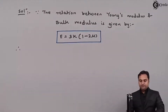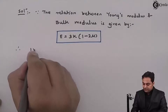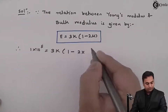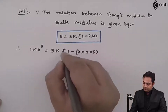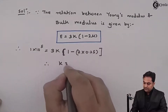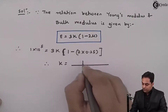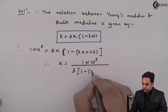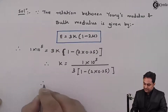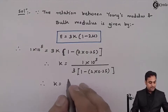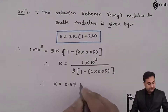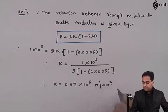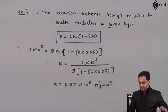Substituting the values, E = 1×10⁵, so: 1×10⁵ = 3K(1 − 2×0.25). Therefore K = 1×10⁵ divided by [3×(1 − 0.5)], which gives K = 0.67×10⁵ N/mm². This is the first answer — the bulk modulus.